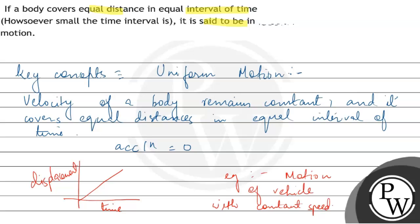If a body covers equal distance in equal interval of time, it is said to be in uniform motion.